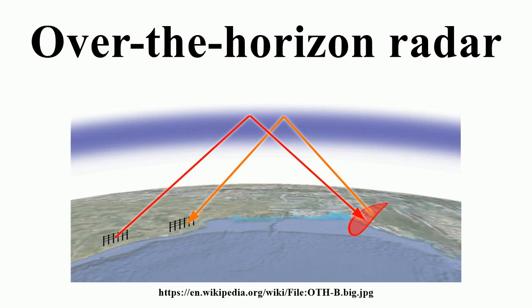In the case of OTH systems this becomes considerably more complex due to similar effects introduced by movement of the ionosphere. Most systems used a second transmitter broadcasting directly up at the ionosphere to measure its movement and adjust the returns of the main radar in real time. Doing so required the use of computers — another reason OTH systems did not become truly practical until the 1960s, with the introduction of solid-state high-performance systems.